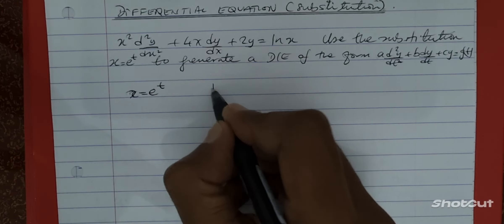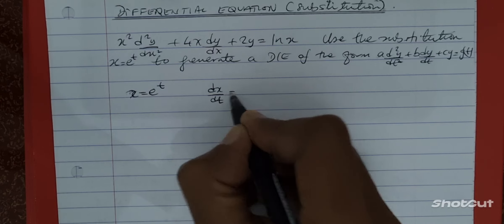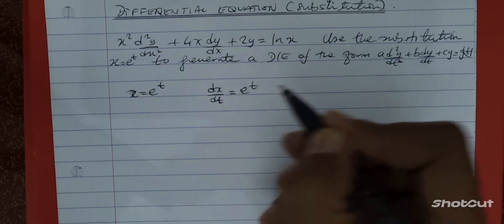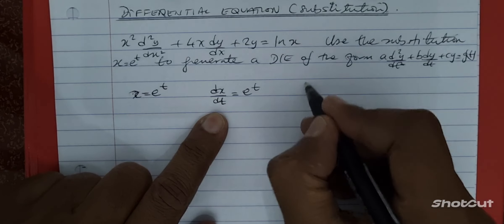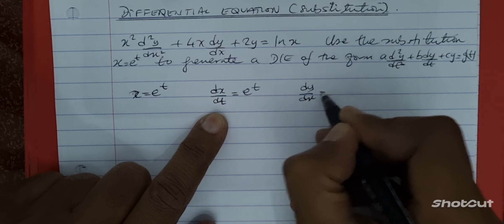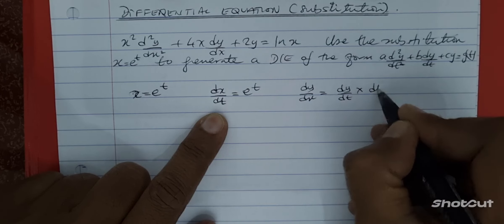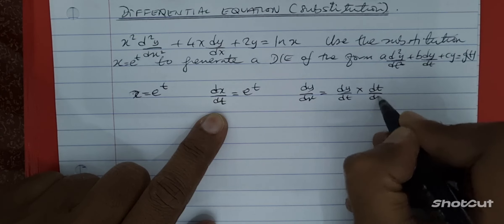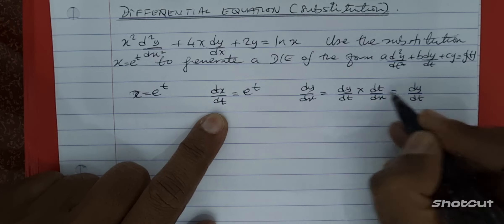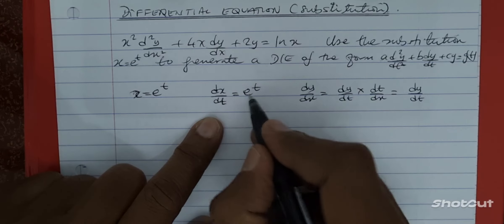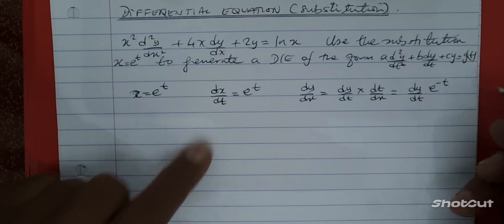To do this, we're going to differentiate the substitution, so dx/dt is equal to e to the t. We're differentiating with respect to t, but we need dy/dx, so dy/dx equals, using the chain rule, dy/dt times dt/dx. Since dx/dt is e to the t, therefore dt/dx is e to the minus t.